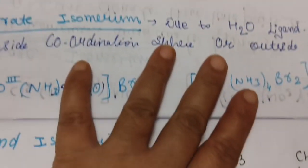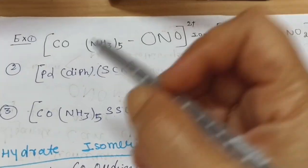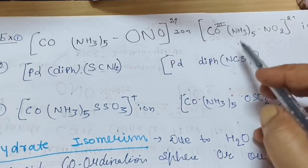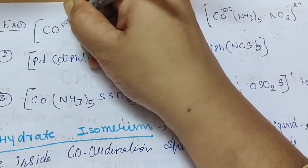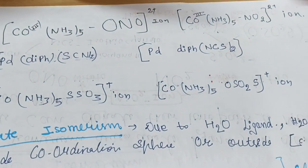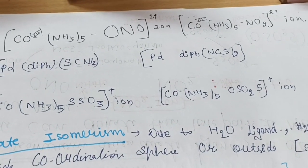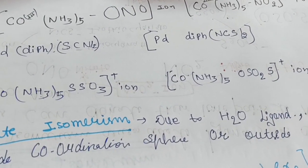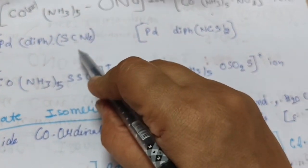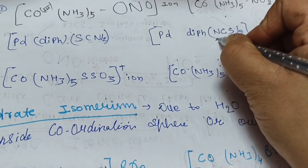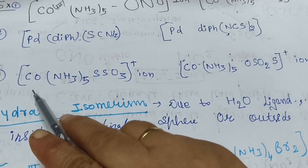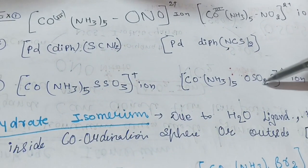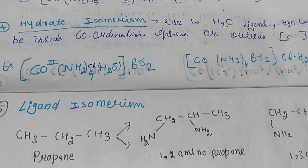Examples of linkage isomerism: [Co(NH₃)₅-ONO]²⁺ where oxygen donates to cobalt (nitrito), and [Co(NH₃)₅-NO₂]²⁺ where nitrogen donates (nitro). Also, [Pd(diphenyl)(SCN)]₂ showing isothiocyanato linkage through nitrogen. Another example is [Co(NH₃)₅-SO₃-S] and its oxygen-linked isomer, showing sulfato-S and sulfato-O linkage isomerism.